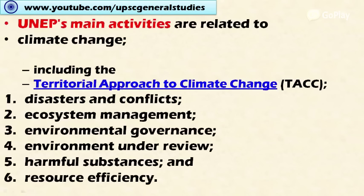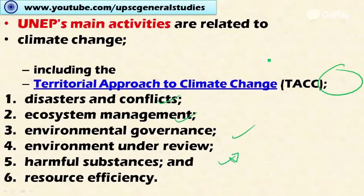UNEP is also active in various climate change-related areas, including a territorial approach to climate change, disaster and conflict management, ecosystem management, environmental governance, harmful substances, persistent organic pollutants, and resource efficiency — such as adoption of renewable energy resources — thereby reducing threats from global warming gases.